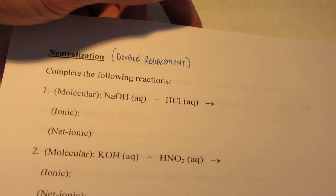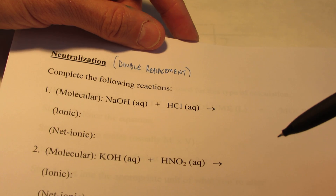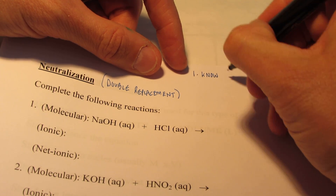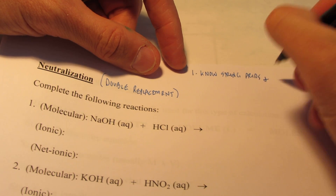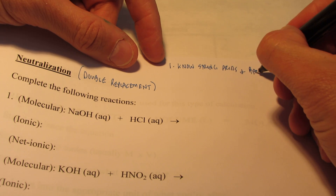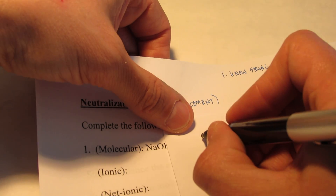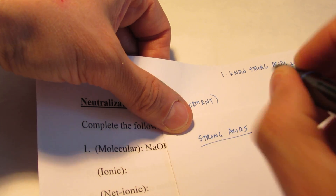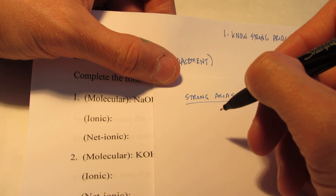A couple of things you need to know before you write neutralization reactions. First of all, you need to know your strong acids and bases. I'm going to make a little list that we're going to refer to today. First, let's list our strong acids. If you were to go back just a couple pages in your notes, we listed six strong acids — we're just going to list those again.